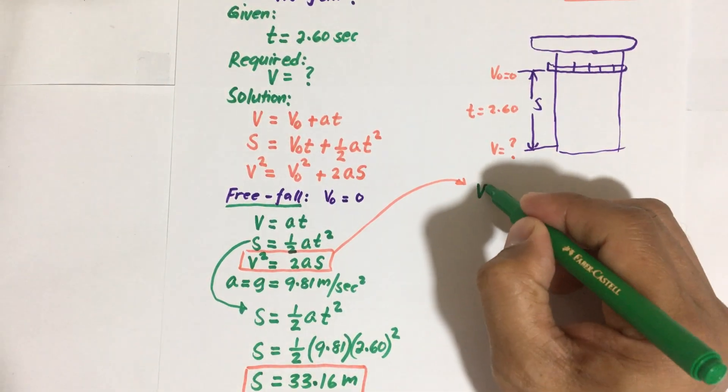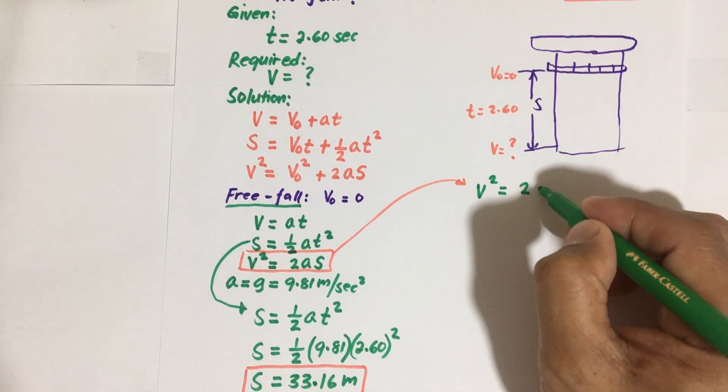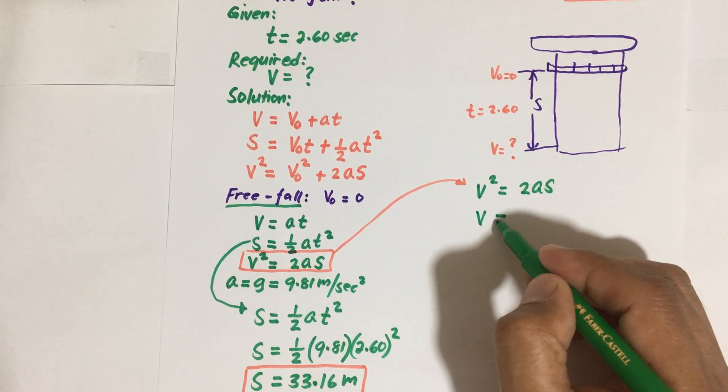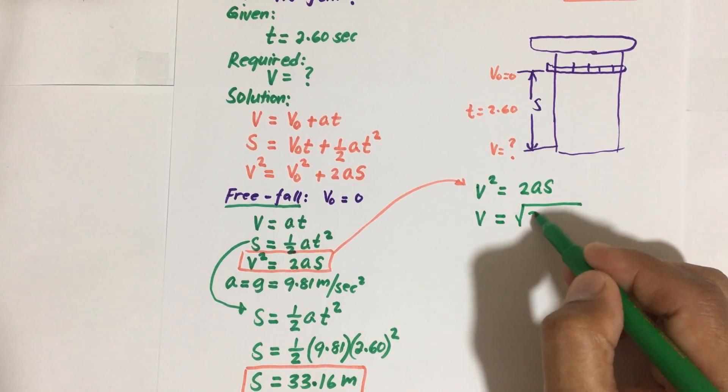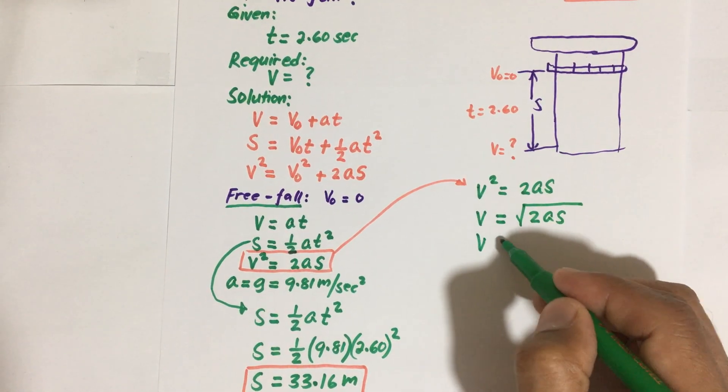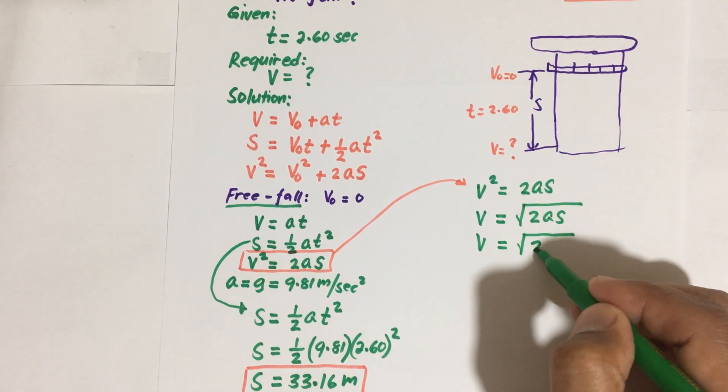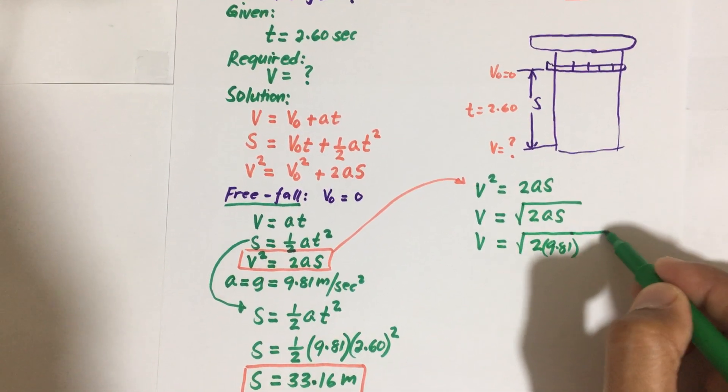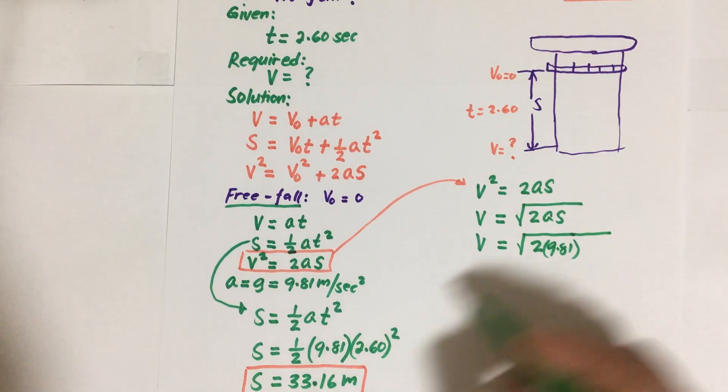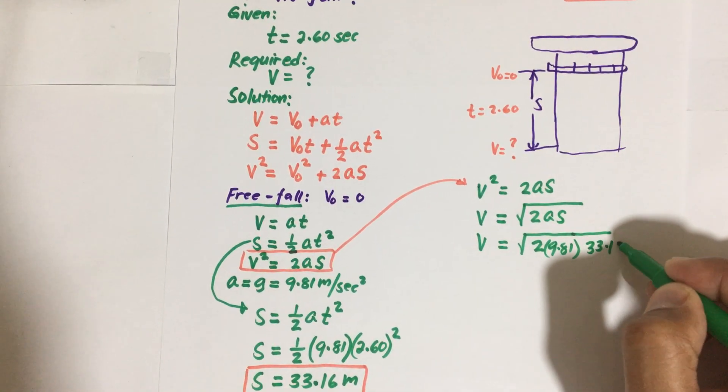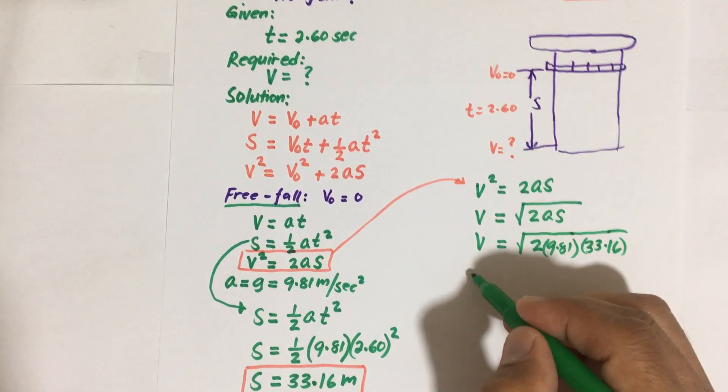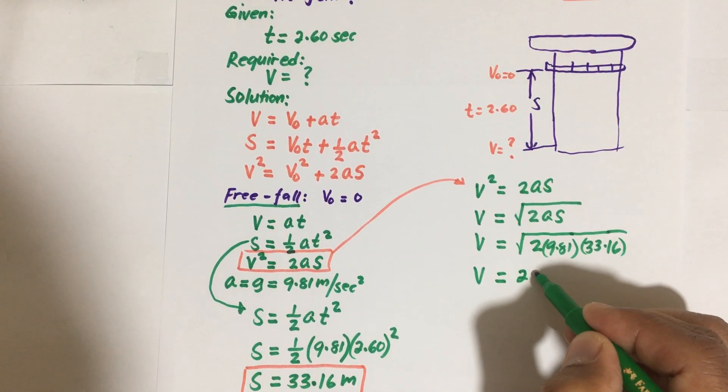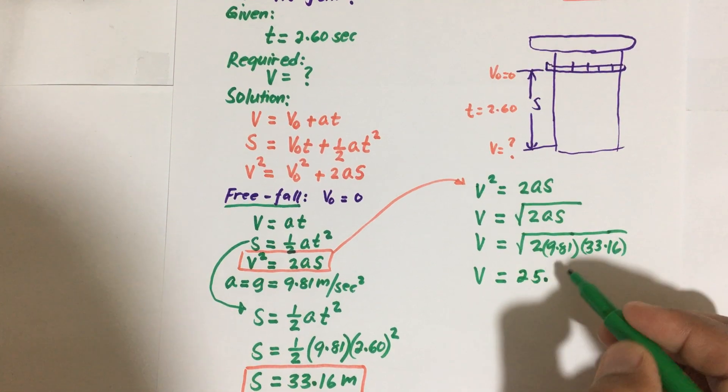So from this one, we have V squared equal to 2 times a S. So taking square root on both sides, we have square root of 2 times a S. So substituting, square of 2 times our a is 9.81, and multiply this by S, the one that we had just calculated, 33.16.